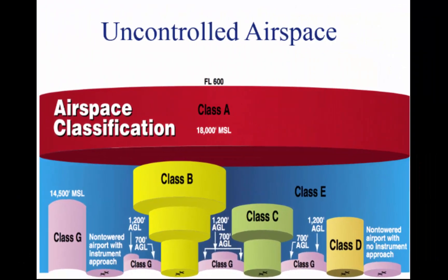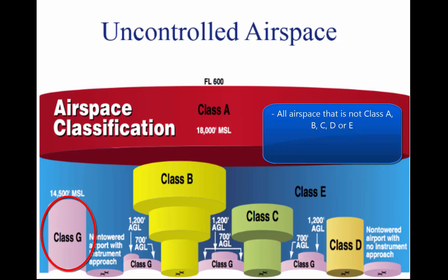The next type of airspace is uncontrolled, or Class G airspace. This is all airspace that is not A, B, C, D, or E. Air traffic control has no authority in this area, but pilots should remember that there are visual flight rule minimums that apply.